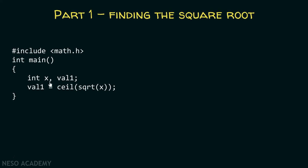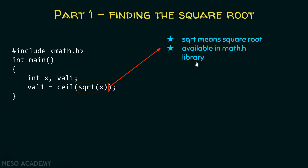Here I have declared two variables, x and val1, both of integer type. To val1, we are providing the value returned by this particular function. It is a complicated-looking function but not that complicated to understand. We need to understand the sqrt(x) function. The sqrt function calculates the square root of the number, and it is available in the math.h library. Therefore, we need to include this library. In our logic, we need to calculate the square root of the number, and this function helps us do that.